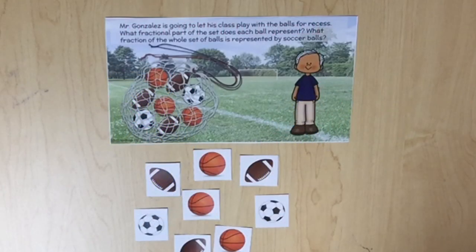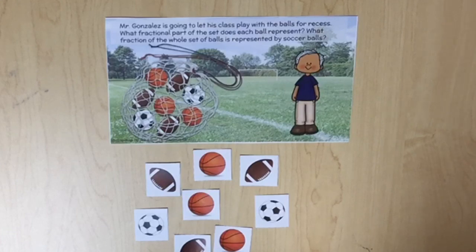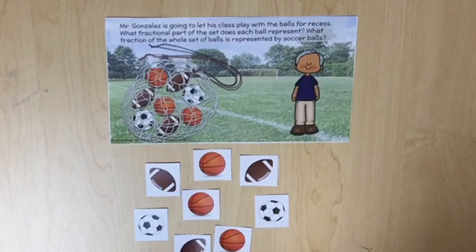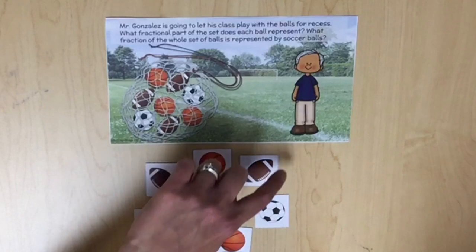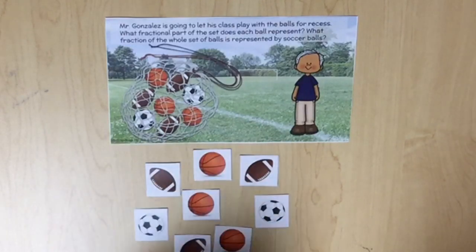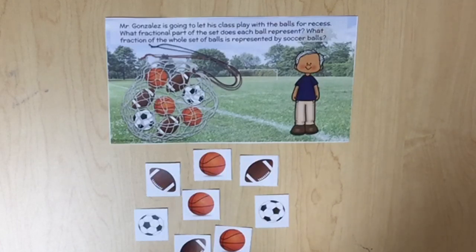Students will use a set model such as a group of objects to determine fractional parts of a set. Mr. Gonzalez is going to let his class play with the balls for recess. What fractional part of the set does each ball represent? What fraction of the whole set of balls is represented by soccer balls? First, students need to determine the total number of objects in a set. Count: one, two, three, four, five, six, seven, eight. There are eight total balls in the set. Each ball is one eighth of the set because there are eight total balls.